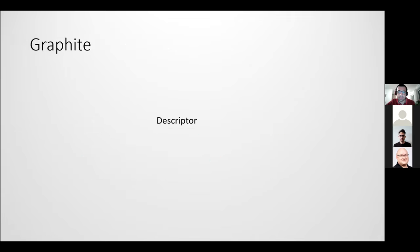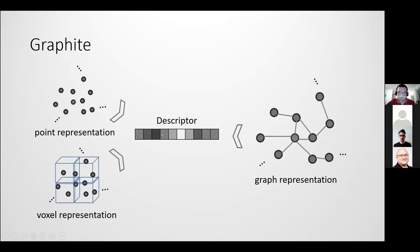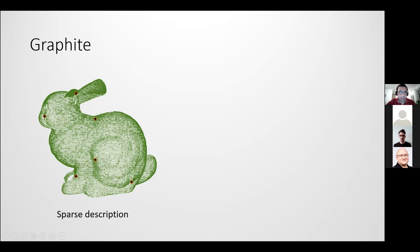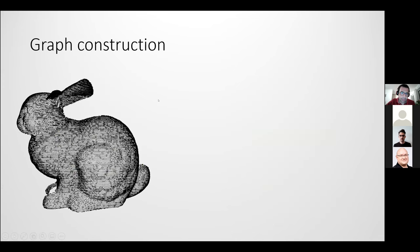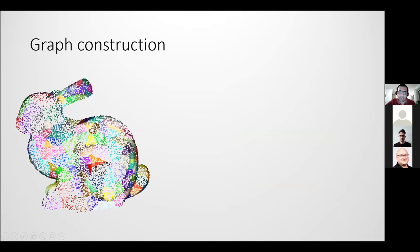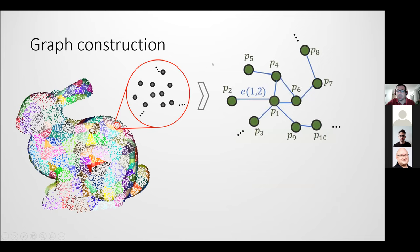Instead of point or voxel representations, we propose using graph neural networks to process point clouds. GNNs are getting a lot of attention for point cloud processing because they can process neighborhood information rather than treating every point individually. We propose using graphs to process point clouds in order to describe local features for point cloud registration, and also to have dense description and dense keypoint extraction for better registration.